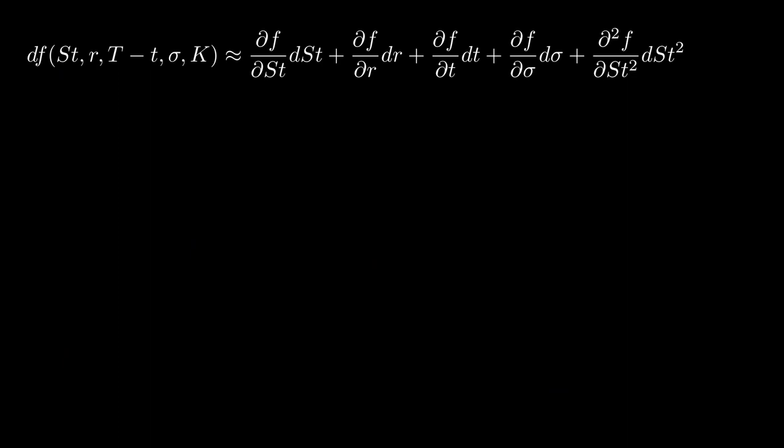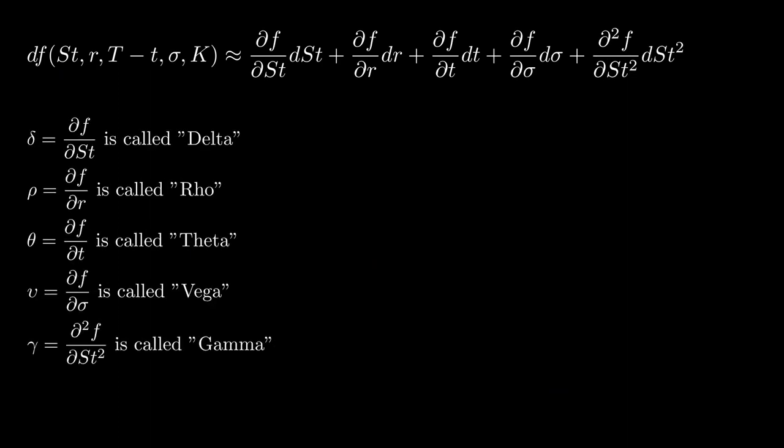To understand this, let's take the Taylor expansion of an option price. In this decomposition, we obtain the variation of the option price as a function of the Greeks. We see that for gamma, the price variation of the underlying is squared. So whatever the direction of variation of the underlying is, this variation will generate P&L if gamma is positive.